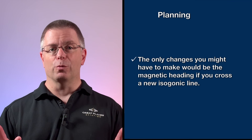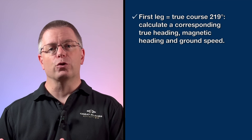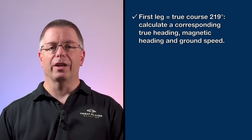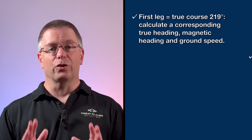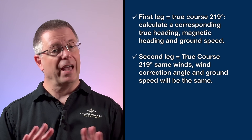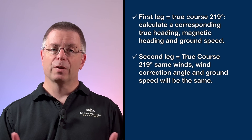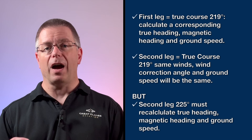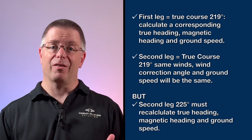The only changes you might have to make would be the magnetic heading if you cross a new isogonic line. For example, if your first leg is on a true course of 219 degrees, you'll calculate a corresponding true heading, magnetic heading, and ground speed. If your next leg is also 219 degrees and the winds haven't changed, your wind correction angle and ground speed will be the same. But if your course shifts to 225 degrees, you're back to square one and have to recalculate everything. Once candidates understand this, their plans start taking less time and they look a lot better.